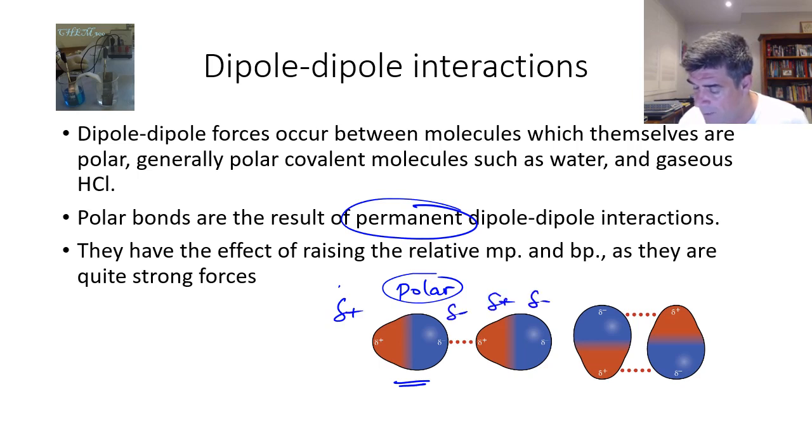And there is an electrostatic attraction as a result, just between the oppositely charged regions in these particular molecules. What these do is they raise relative melting and boiling points, as the dipole-dipoles are relatively strong forces, especially if they are that subset of hydrogen bonds.